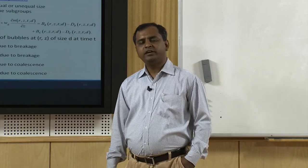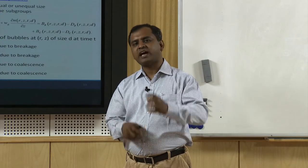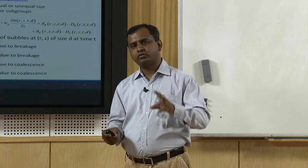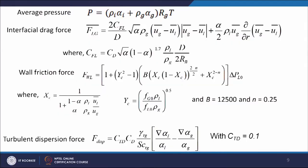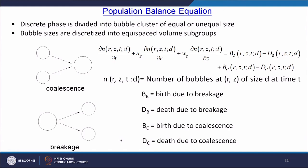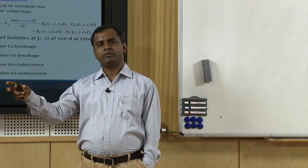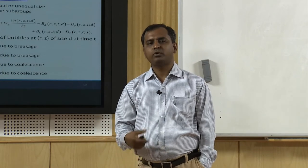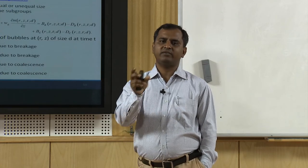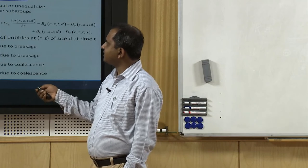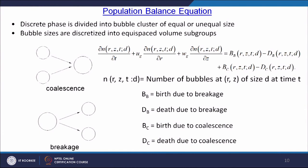For finding out the average bubble diameter, we use a technique called population balance methodology. In population balance methodology, the dispersion of phases is considered as a population of different sized bubbles — from very small to very large diameter. The discrete phase is divided into bubble clusters of equal or unequal sizes. For example, if bubble diameters range from 1 mm to 10 mm, we count how many bubbles exist from 1 to 2 mm, 2 to 3 mm, and so on. Bubble sizes are discretized into equi-spaced volume subgroups, and we write the evolution equation for the number density n(d, r, z, t) for each size group.